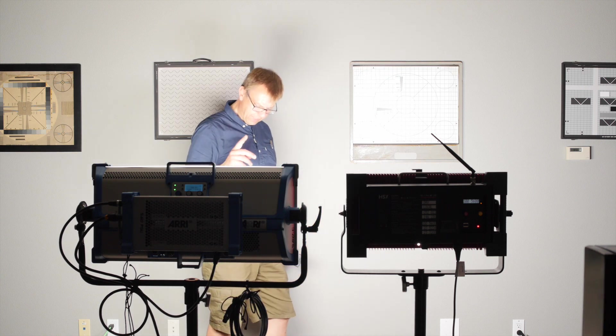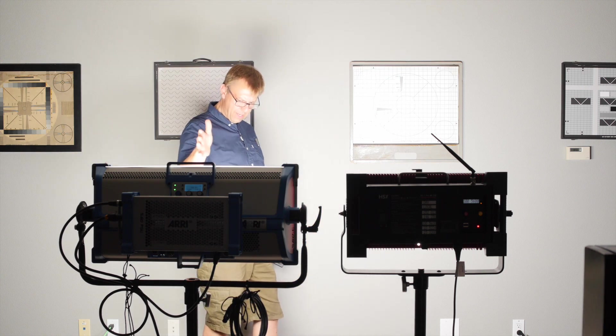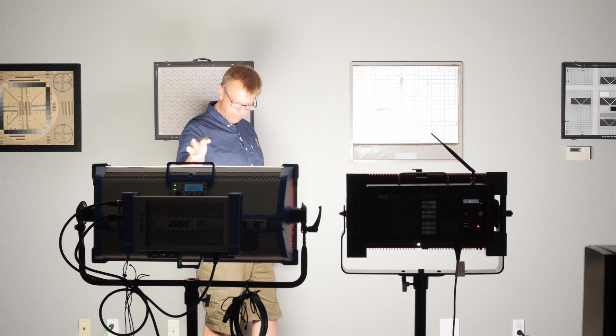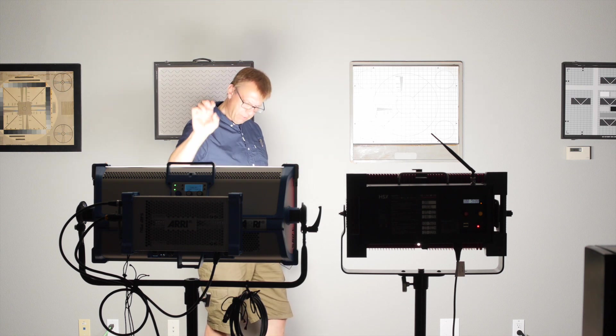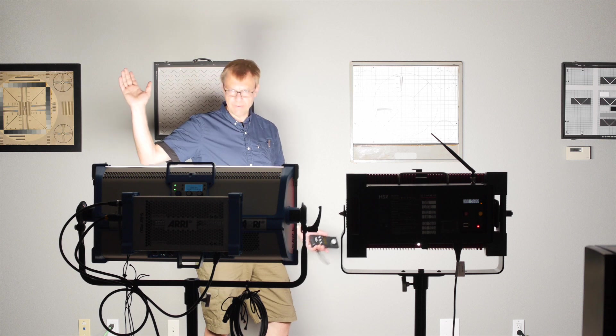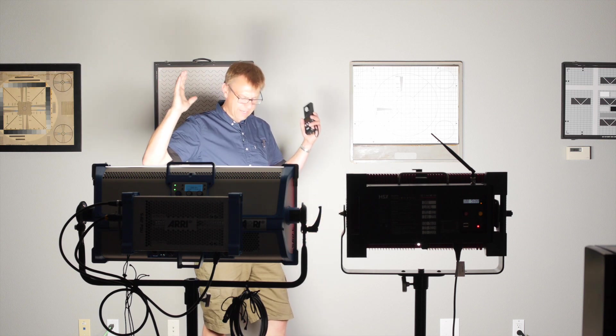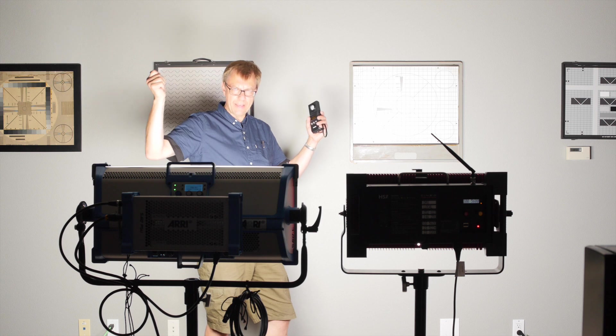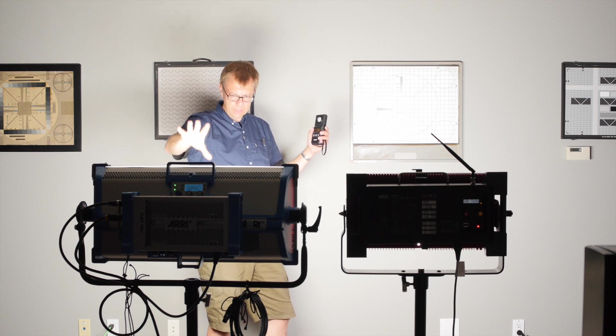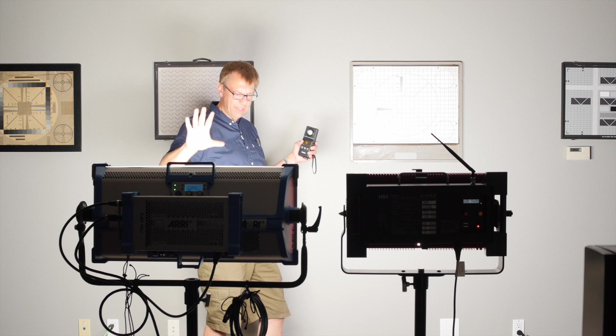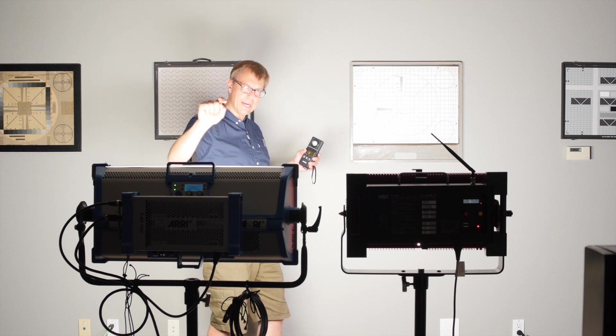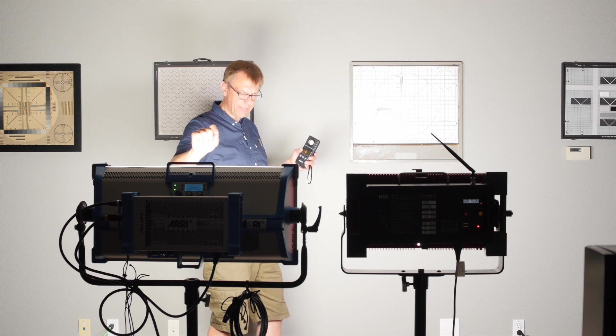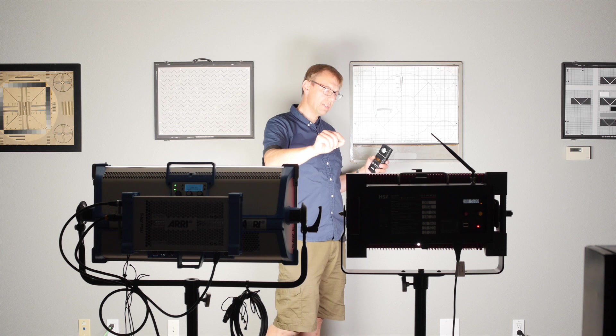So interestingly enough, I can take out green with the dials on the SkyPanel, but I don't need to on the HSX. So yes, it's great that you can dial in plus/minus green if you're in an environment that has fluorescents that have that spike, or for whatever reason. And on the other hand, if you're just using these units, you might have to actually dial out a little bit of green from the actual unit, whereas you would not have to do that with the HSX.